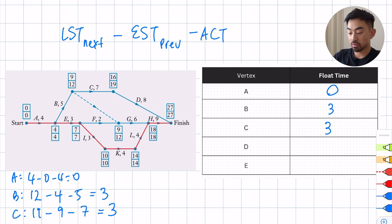Let's look at D now. So D is here and I want to find the float time for D. I look at the next which is 27 minus the previous early which is 16 minus the activity which is 8. So 27 minus 16 is 11 minus 8 is 3. So also 3.